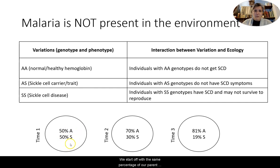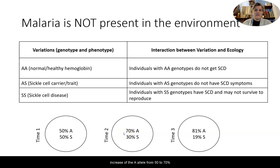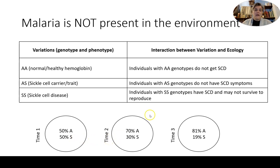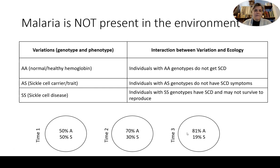We start with the same parent population of 50 percent A and 50 percent S. By the second generation, there is an increase in the A allele from 50 to 70 percent, and a decrease in the S allele from 50 to 30 percent. By the third generation, the A allele has increased further from 70 to 81 percent, while the S allele has decreased from 30 percent to 19 percent.